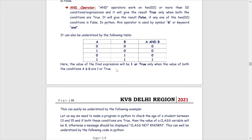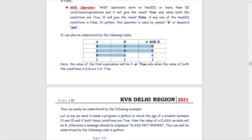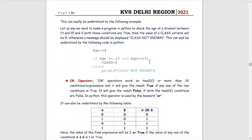Let us understand the 'and' operator using a truth table. We have two statements or conditions: A and B. If both values are false (0, 0), then A and B gives 0. In all cases where one or more statements is false, A and B gives false (0). You get the result 1 (true) only when both statements A and B are true. If the values of both statements are true, then only it will give you the result 1.